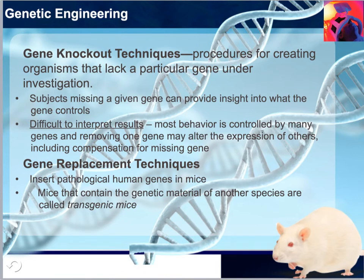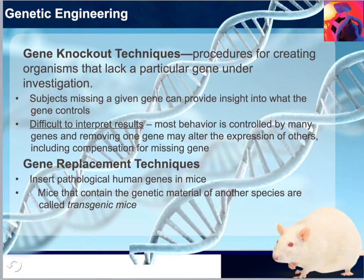Genetics is a science that has made significant progress in the last two decades, and biopsychologists are taking advantage of these benefits. Gene knockout techniques are procedures for creating organisms that lack a particular gene under investigation. The subjects missing a given gene can provide insight as to what the gene controls. However, it is important to note that it is difficult to interpret the results because most behavior is controlled by many genes, and removing one gene may alter the expression of others, leading to confounding variables including compensation for the missing gene.